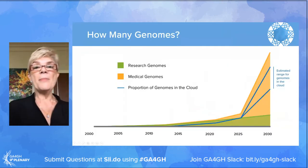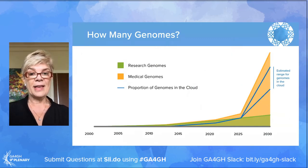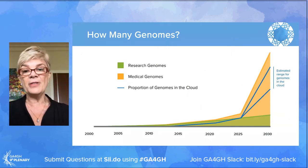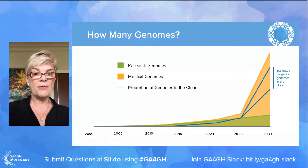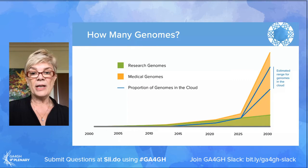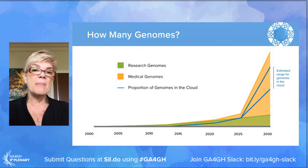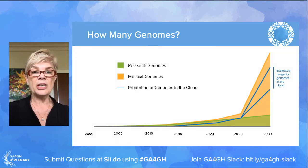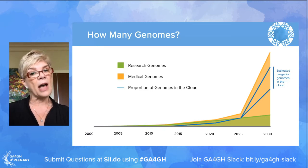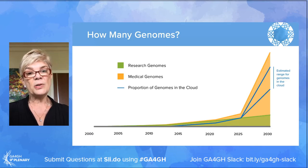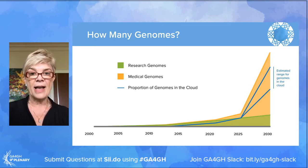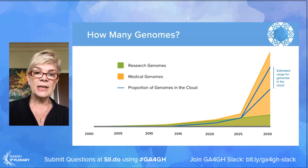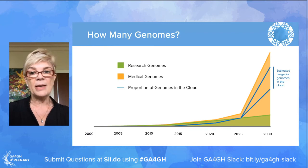What became increasingly obvious is that before 2015 we were generating most of our genomes within research, but we're predicting that by 2025 we'll have at least 60 million genomes generated in clinical practice. We need to harness that information to improve the accuracy of clinical diagnosis, and also use it for gene discovery and therapeutics in particular.